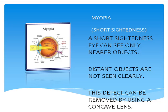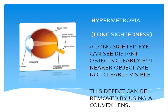Next, hypermetropia — long-sightedness. A person with long-sightedness can see distant objects clearly, but has a problem with near objects. The corrective lens used is a convex lens.